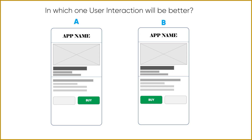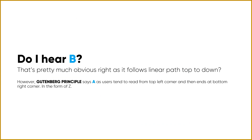Example two: which user interaction is better? Option A has an image, various text, and then a buy button linearly at the bottom, while option B places the buy button diagonally at the bottom right. Option A is better as it follows a linear top-down path. The Gutenberg principle says users tend to read from the top-left corner and end at the bottom-right in a Z pattern.